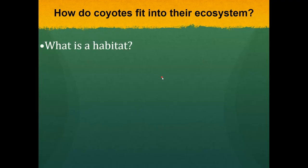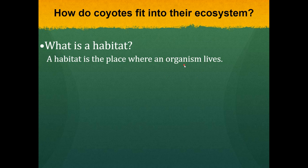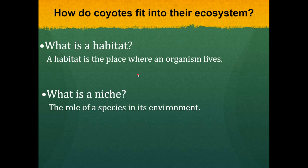First, we need to talk about a couple of vocabulary terms. A habitat is the place where the organism actually lives — the physical geographical location of that organism. An organism's niche is the role that it plays in its environment. So the habitat is the physical place where the organism lives, but its niche is its role in the environment — what is its job as far as its place in the ecosystem?